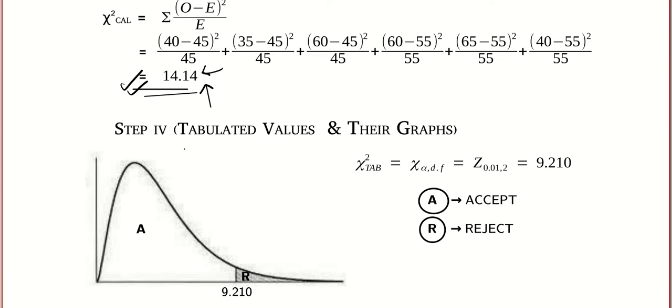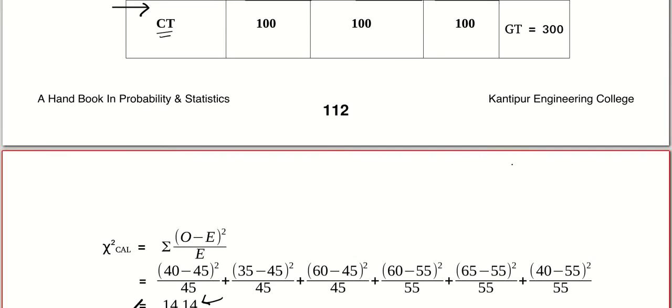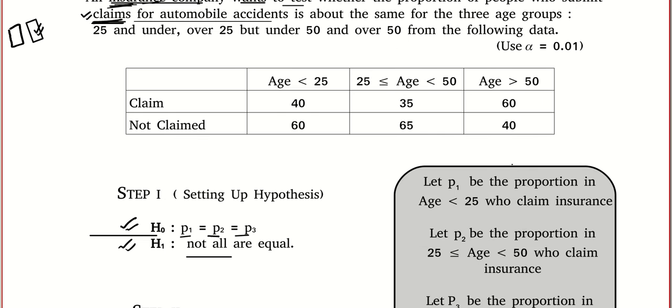Then the tabulated value. I'm warning you: in chi-squared, chi-squared will be used in three different scenarios. Please be very, very careful about degree of freedom.